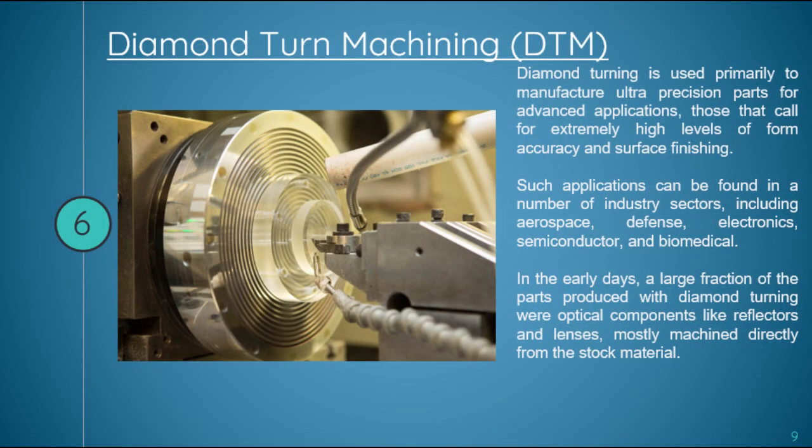Diamond turn machining, also known as diamond turning, is an ultra precision machining technology for the generation of complex and functional surfaces and extremely fine micro structures, using geometrically defined diamond cutters — either natural or synthetic — depending on the finishing scale and requirements. At present, diamond turning can be readily applied on a wide range of metallic alloys, polymeric materials, and precious crystals.